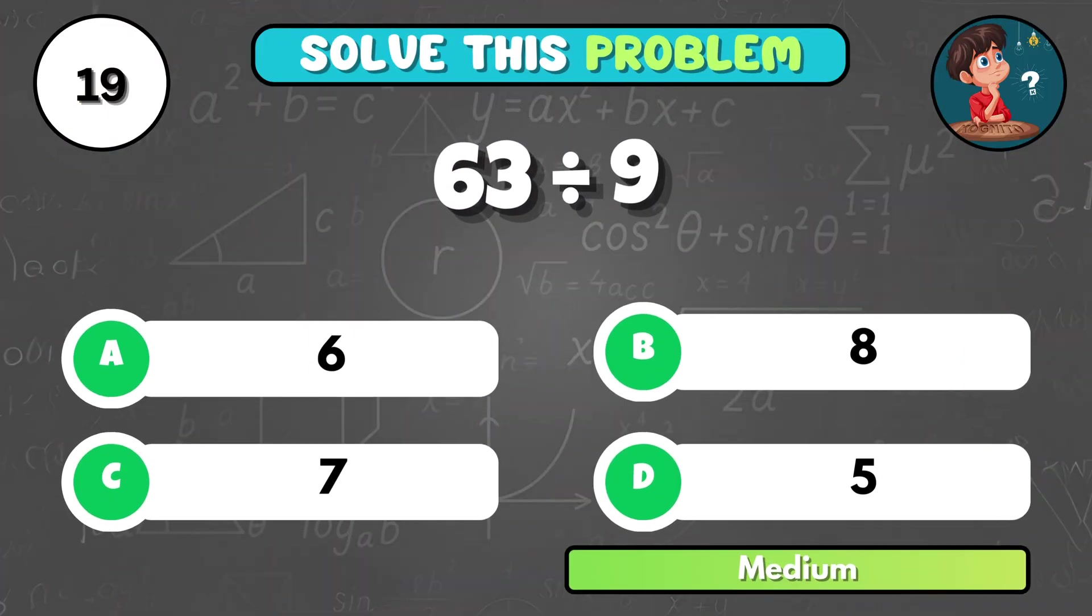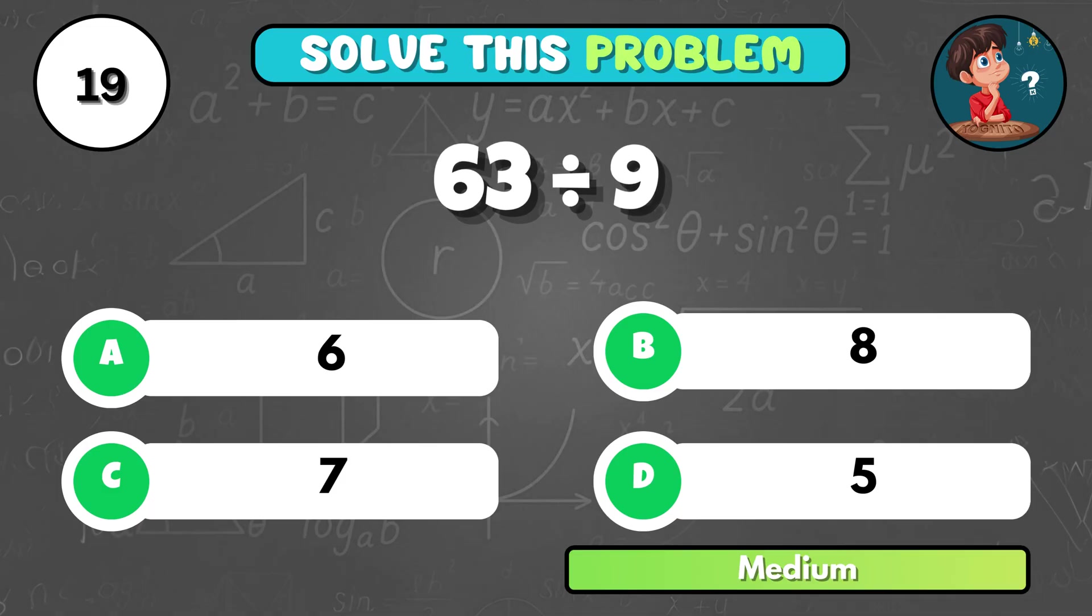If you divide 63 by 9, what's the answer? That's C, 7.